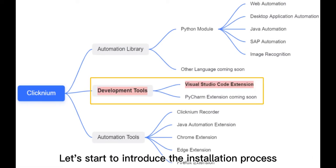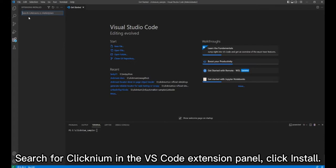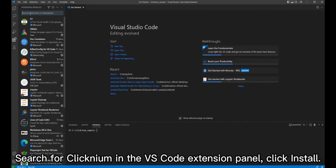Let's start to introduce the installation process and getting started one by one. First, the VS Code Extension Installation: search for Clicknium in the VS Code Extension panel, then click Install.